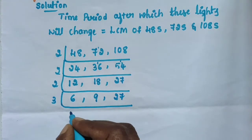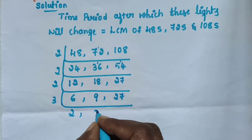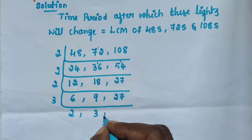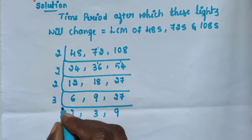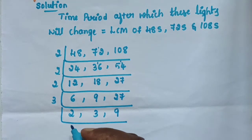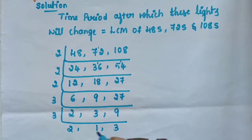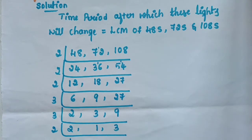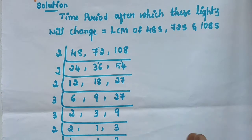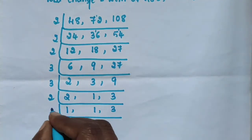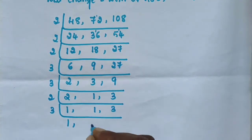Next take 3: 3 twos are 6, 3 threes are 9, 3 nines are 27. Next take 3: 2 as it is, 3 ones are 3, 3 threes are 9. Next take 2: 2 ones are 2, then 3, 2 ones are 3.